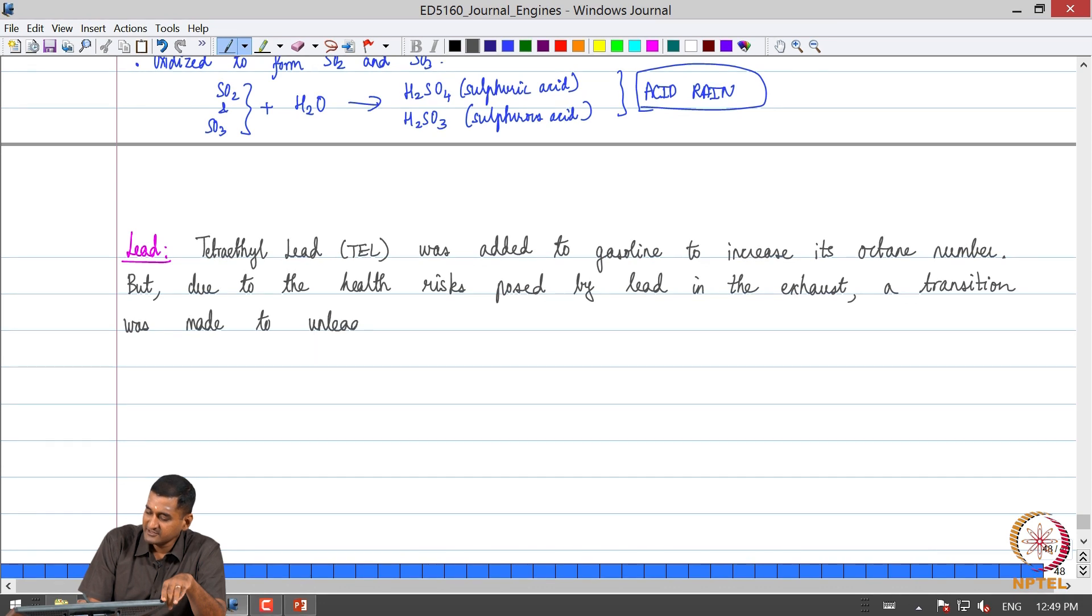Subsequently, due to the health risks posed by lead in the engine exhaust, a transition was made to unleaded gasoline. Today we use unleaded gasoline or unleaded petrol. Lead was added in the first place to essentially increase octane number, but now it is not there.